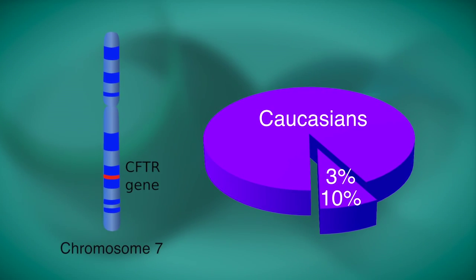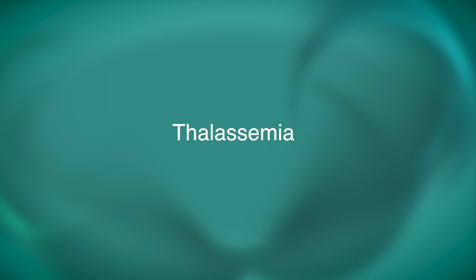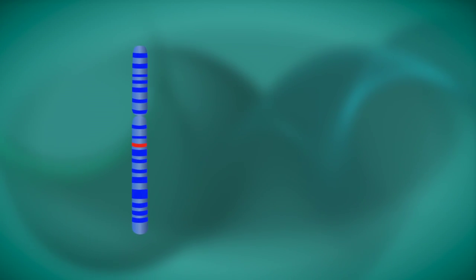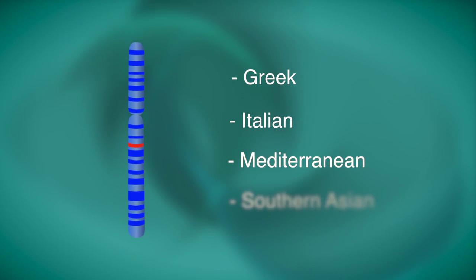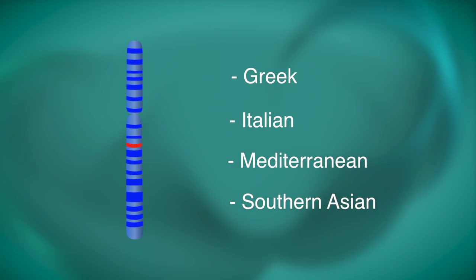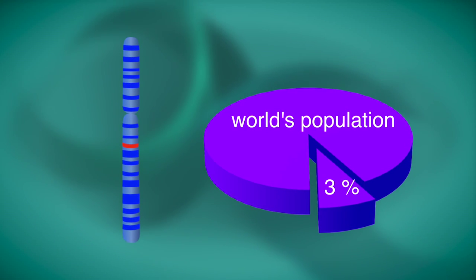CF is the most common, serious, inherited disease in Caucasians, whereas thalassemia are more common in people of Greek, Italian, Mediterranean, or Southern Asian descent. About three percent of the world's population carries a gene for thalassemia.